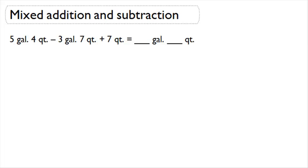Now let's look at how to solve a problem that mixes addition and subtraction in compound units. Here the problem says: 5 gallons and 4 quarts minus 3 gallons and 7 quarts plus 7 quarts equals how many gallons and how many quarts?